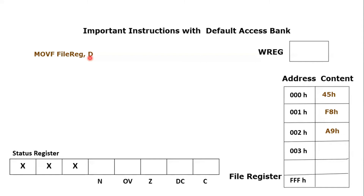We have discussed the d-bit in some other instructions as well. If d is equal to zero, or W, the destination register would be the working register. But an interesting point comes when d equals one or F — which normally indicates the destination is a file register — but the data is already coming from a file register.